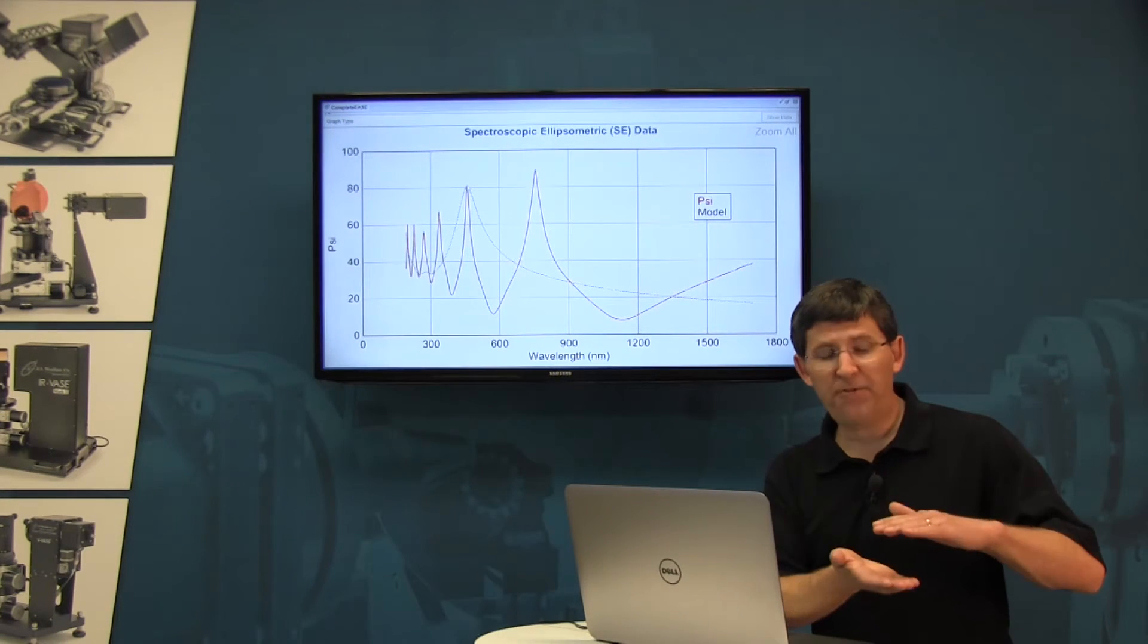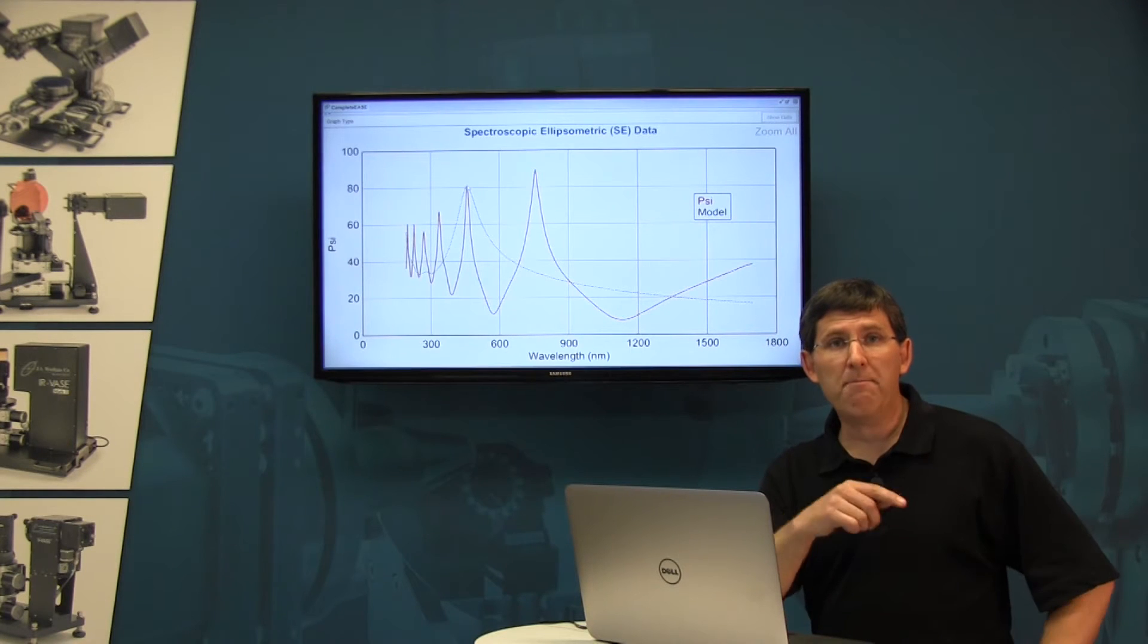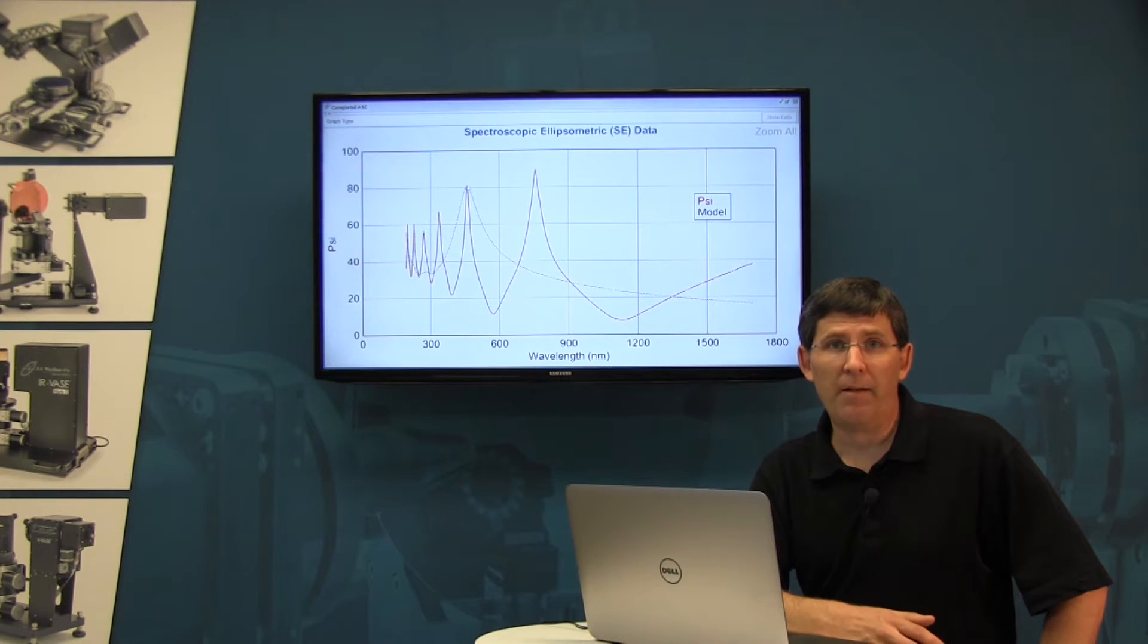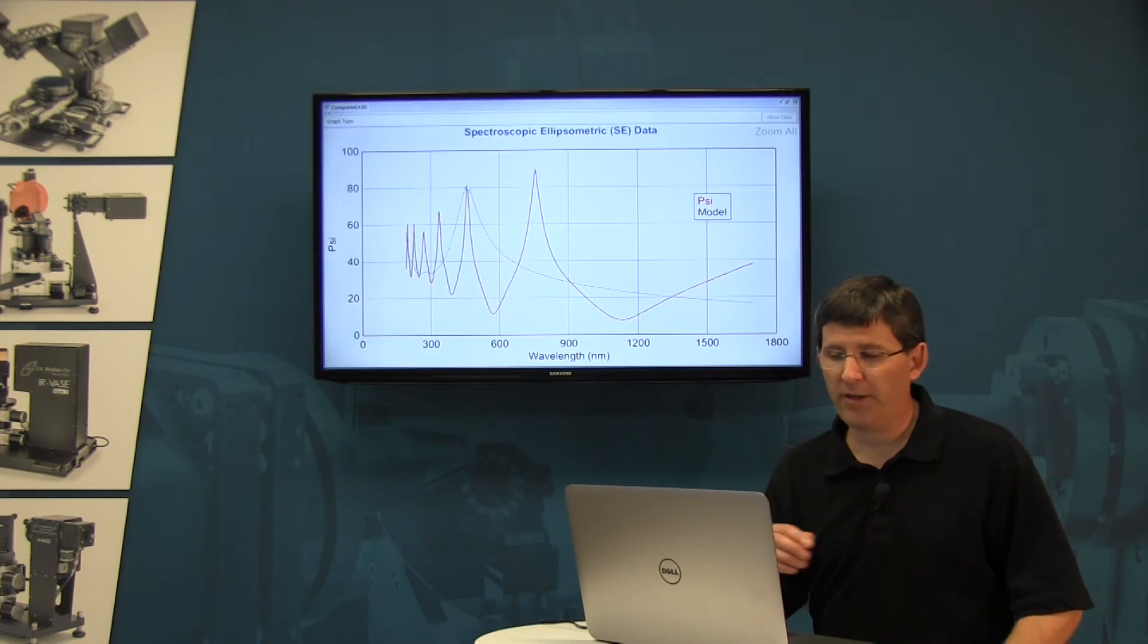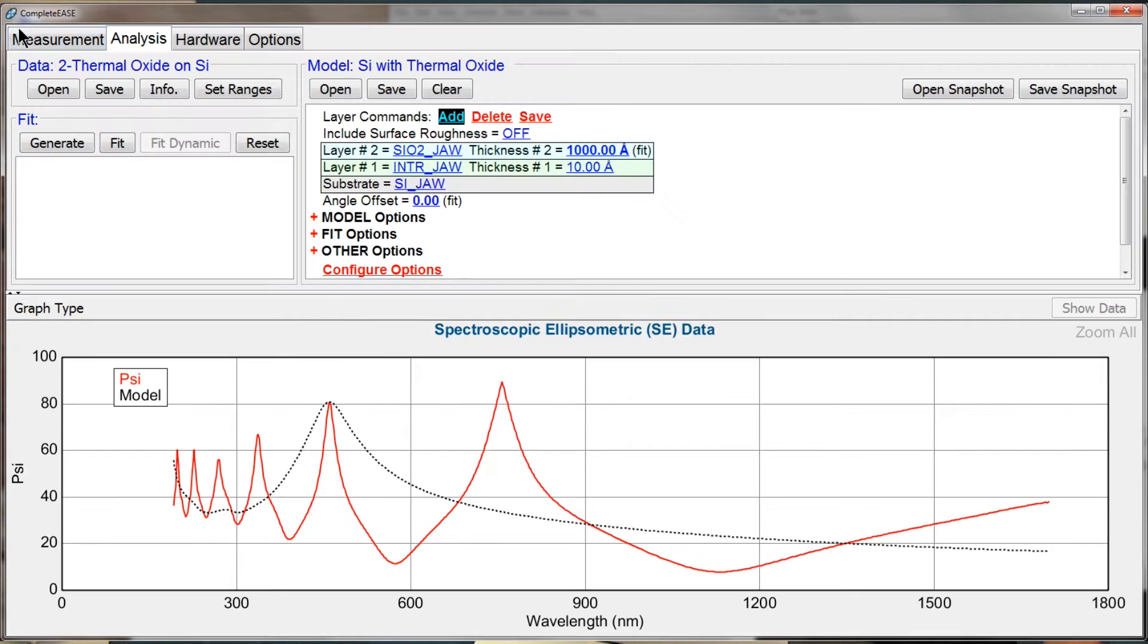Now in general, as the film gets thicker you're going to get more peaks and valleys in your data, and that's one way to tell how thick the film is. Let me jump back to the model here and let's change the thickness.